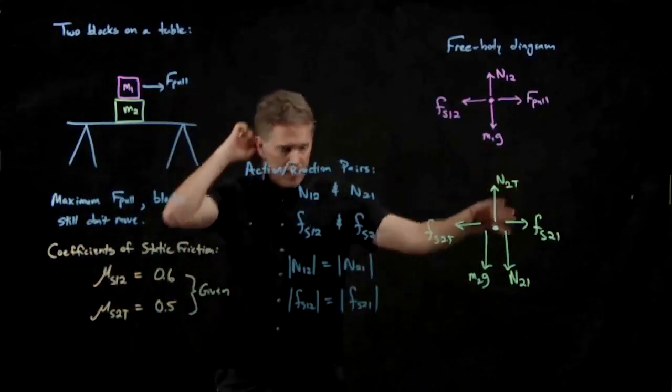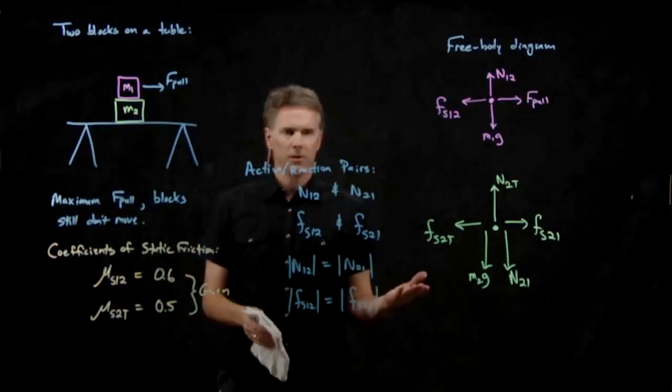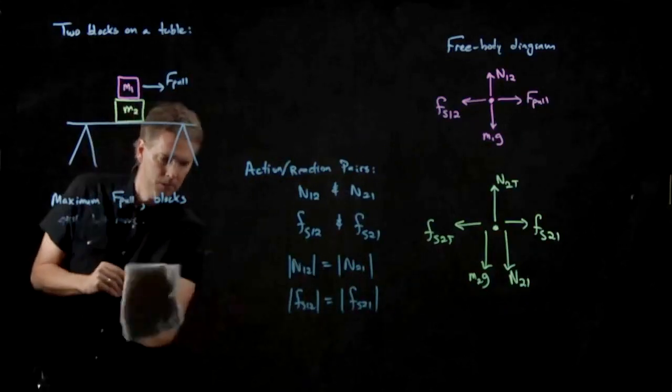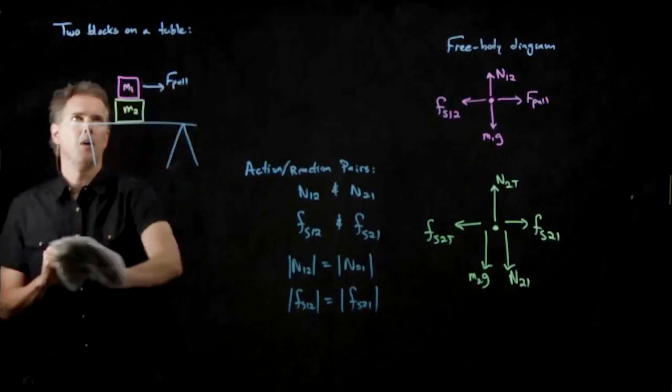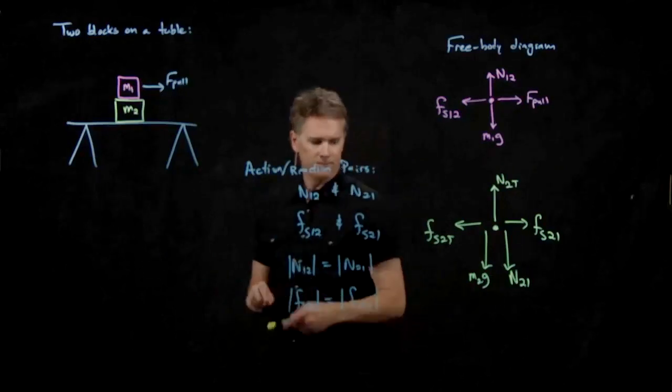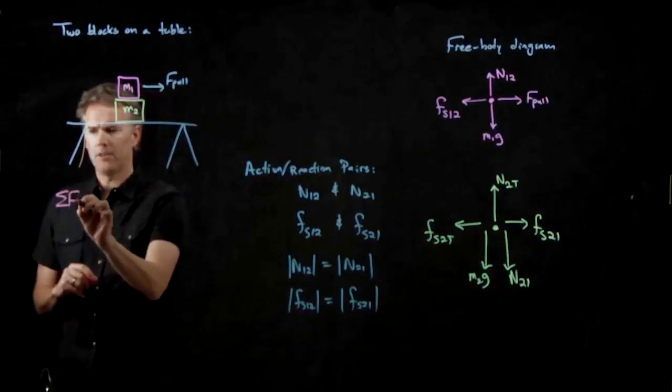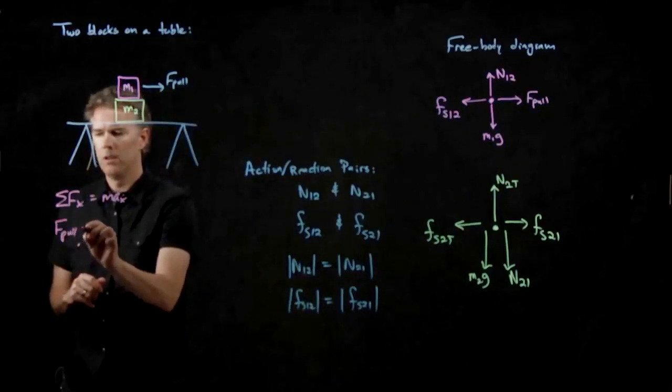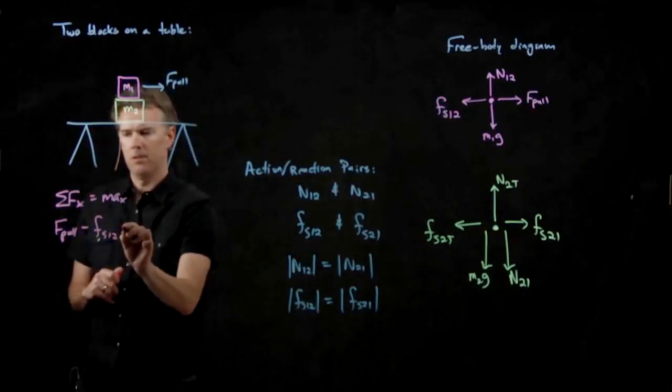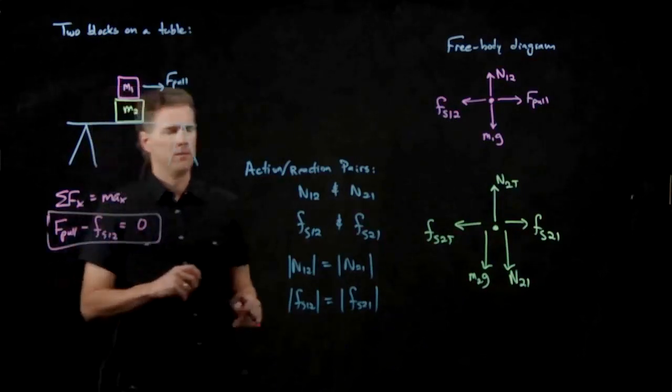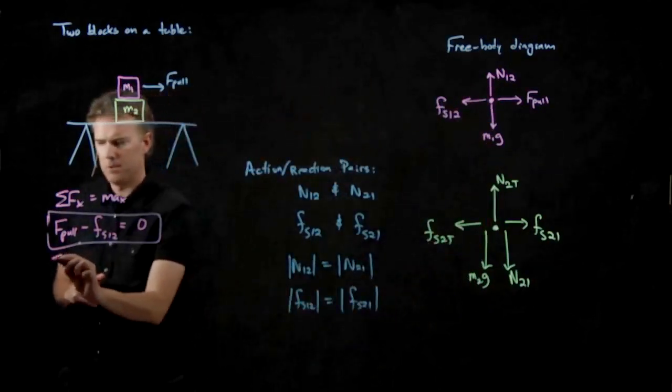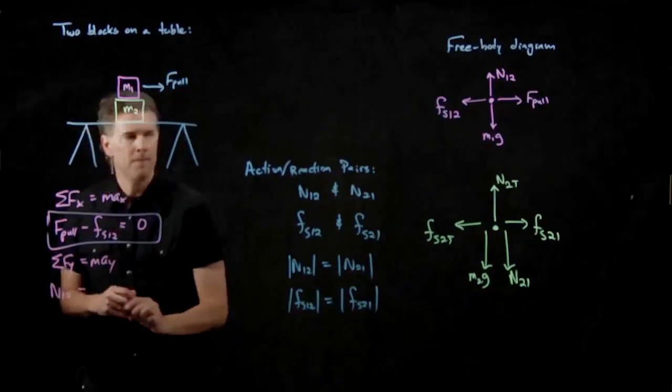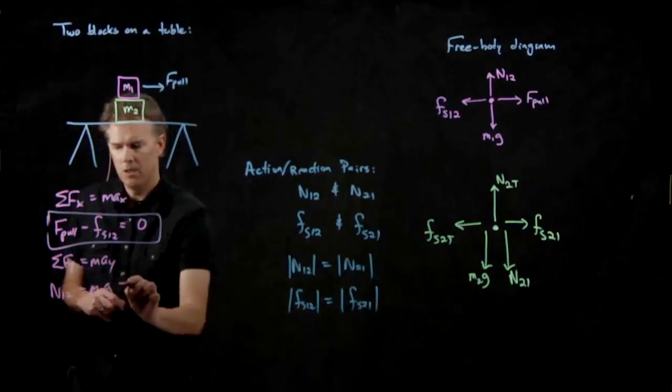So now that we have this free body diagram set up, how are we going to deal with this problem? How could we possibly figure out what is the maximum pull that we could have and this thing still doesn't move? Well, we need to do some math, right? We need to write down Newton's second law and then we have to do some math. So let's do that. We've got number one, sum of the forces in the x direction is equal to the mass times the acceleration in the x direction. F pull minus Fs-1-2 is equal to zero. The whole thing's at rest. The vertical components, not too bad. Sum of the forces in the y direction equals the mass times the acceleration in the y direction. We get N-1-2 minus M-1-G. That also equals zero.